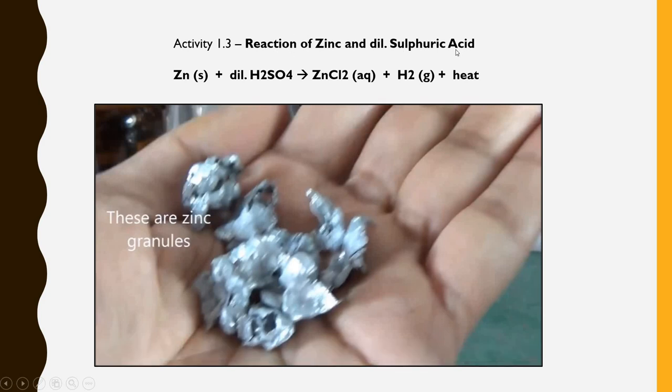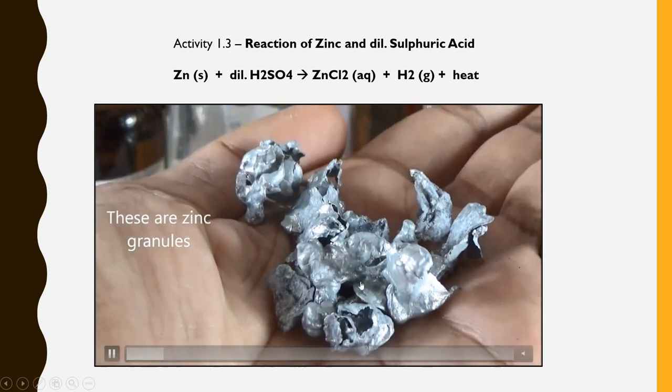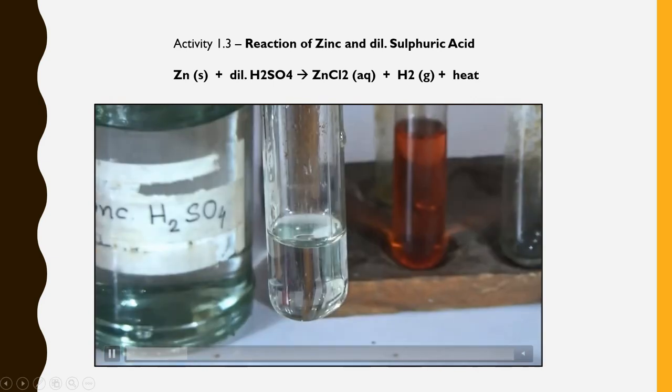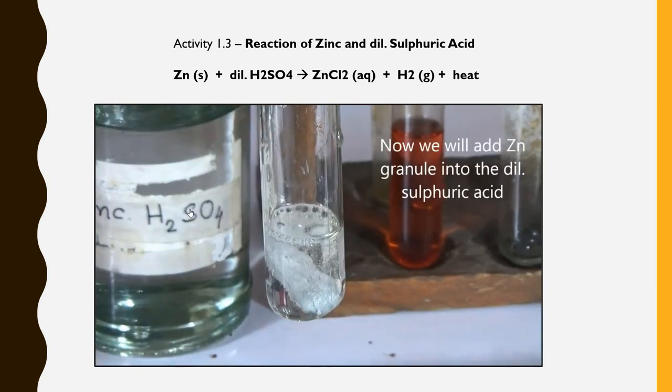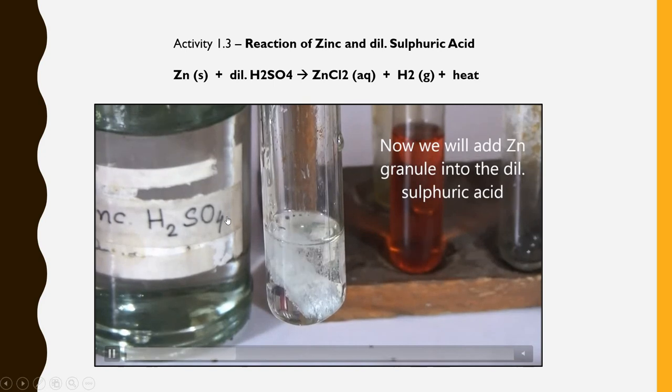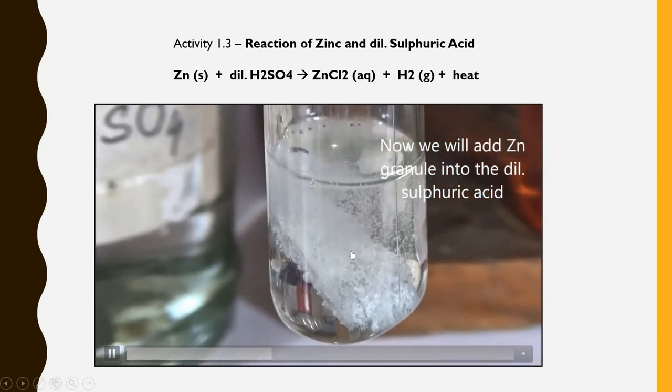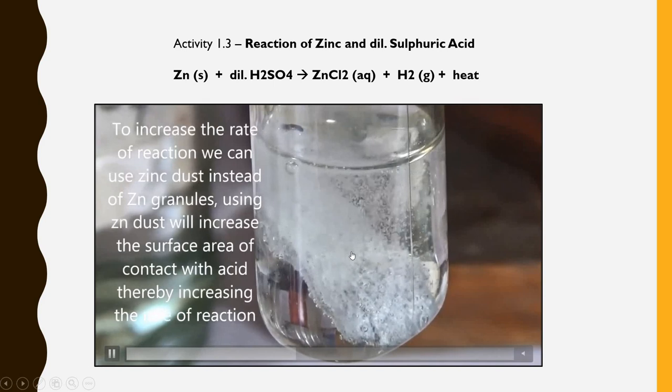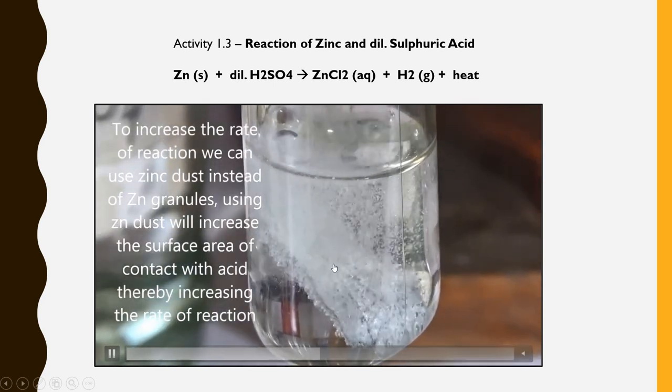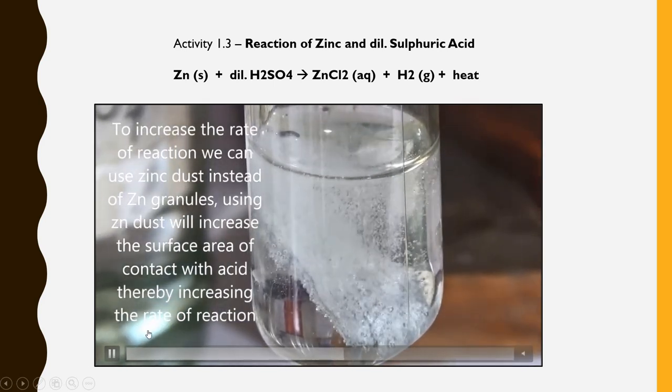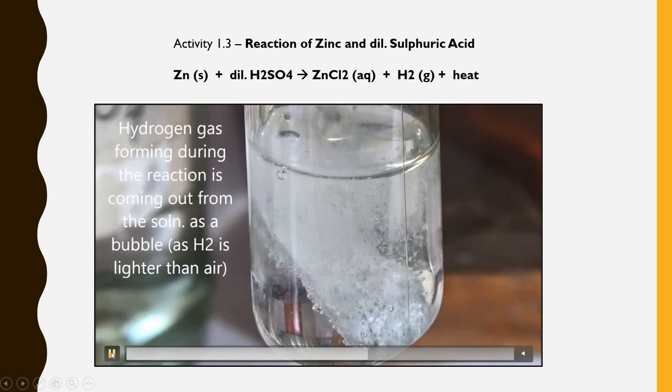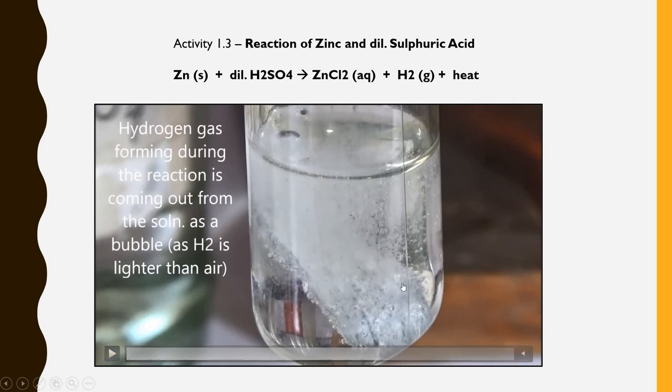Let's see the next example. Reaction of zinc with dilute sulfuric acid. Here we have some zinc granules. When these zinc granules are added to dilute sulfuric acid you will observe the bubbles coming out from the solution. These bubbles are of hydrogen gas. Meanwhile if you touch this test tube it becomes hot. This means that there is a change in temperature and evolution of gases.